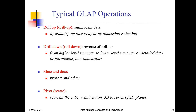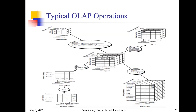Next, slice and dice. Slice is a project operation — we get some columns. Dice is a select operation — we get some rows. Next, pivot: pivot is nothing but a rotation of the slice operation result.